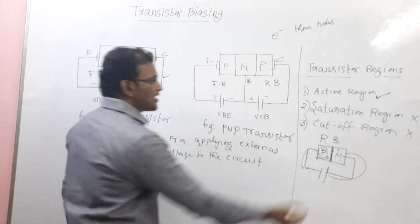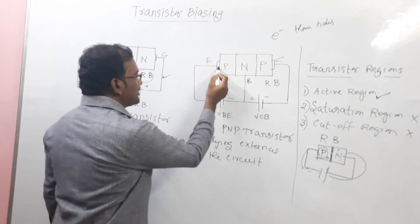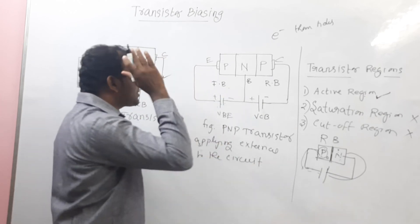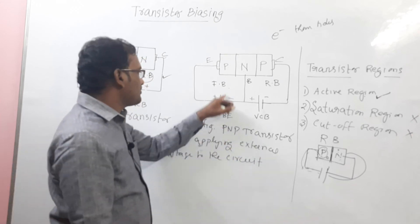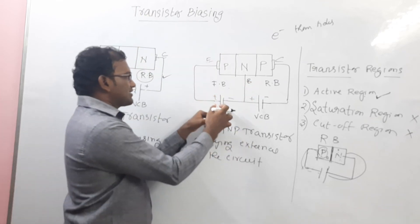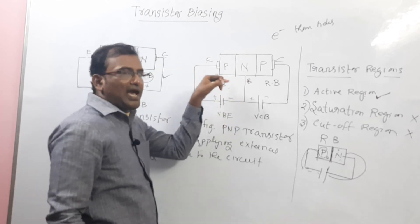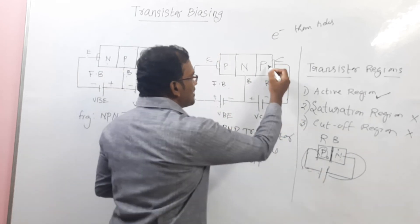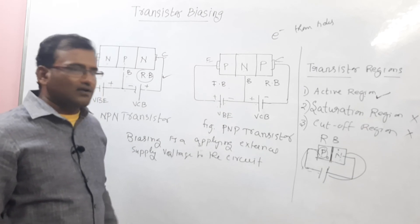Similarly, we can use the same mode — active region. Here also, the emitter-base junction is connected as forward bias. P is connected to the positive terminal and N is connected to the negative terminal. It acts as forward bias, so current will flow. Whereas, collector-base junction is reverse bias — P is connected to the negative and N is connected to the positive. This is nothing but the transistor biasing of the PNP transistor.